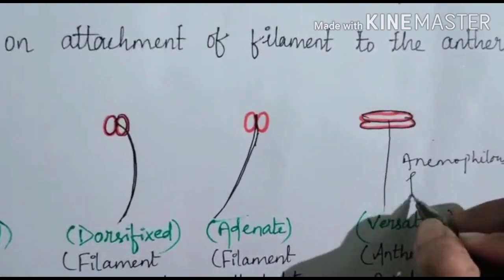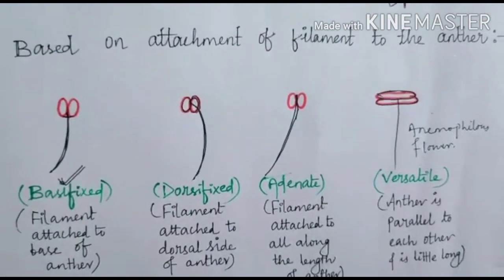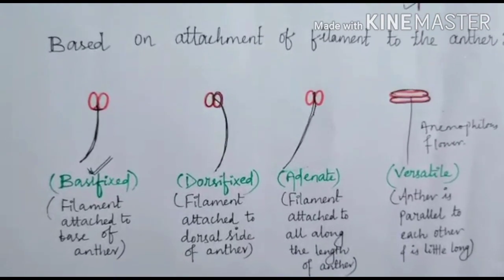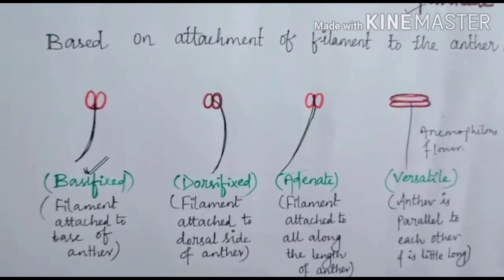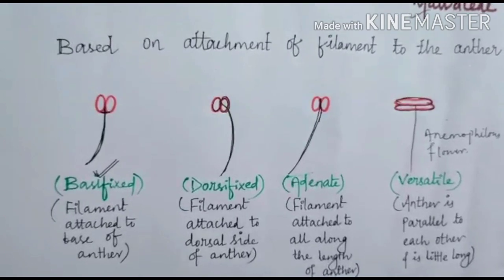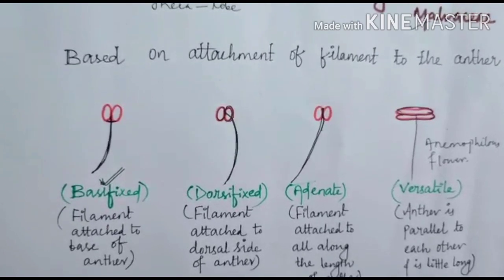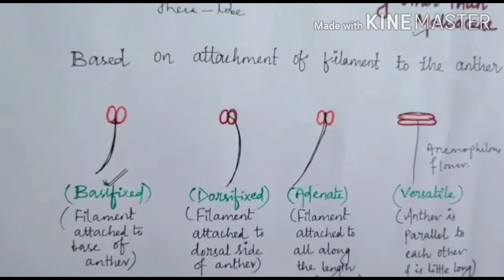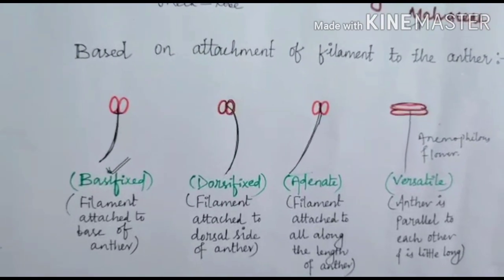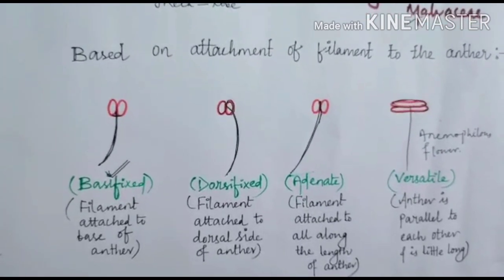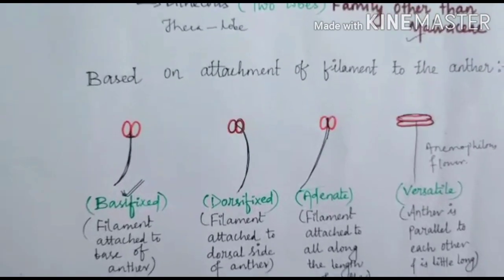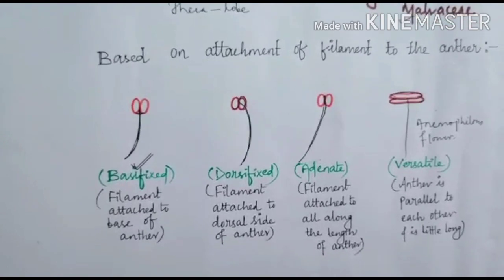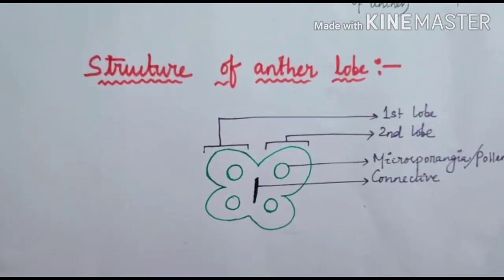Versatile anther is found in anemophilous flowers. Anemophilous flowers are those in which pollination is done by the wind. When the wind blows, the anther lobes keep moving, and the pollen grains present inside the anther are easily carried away by the air. So it is called the versatile type of anther.